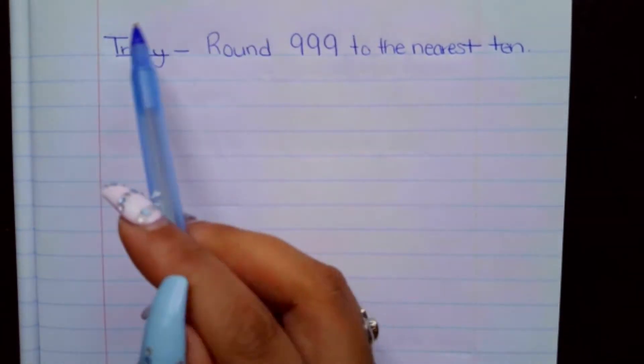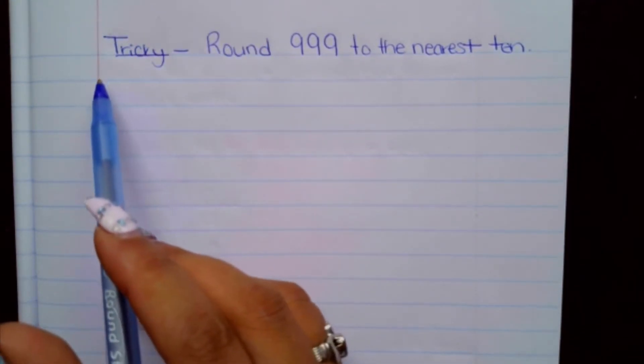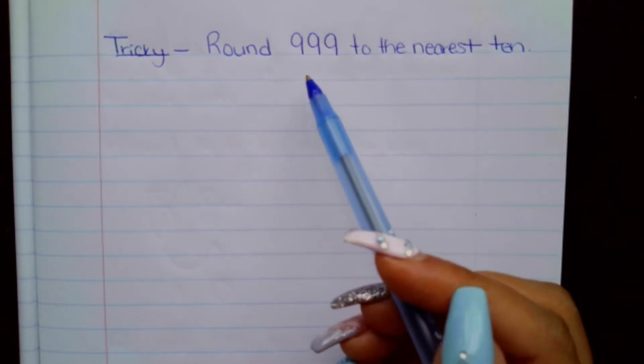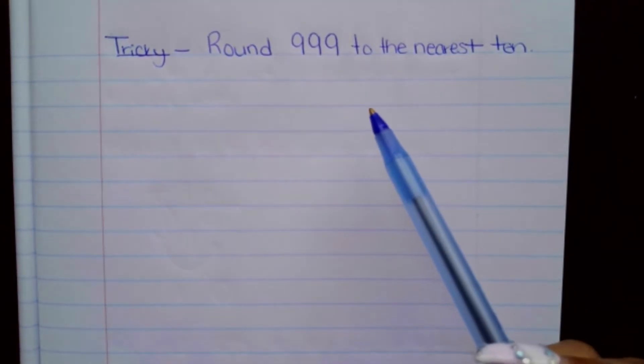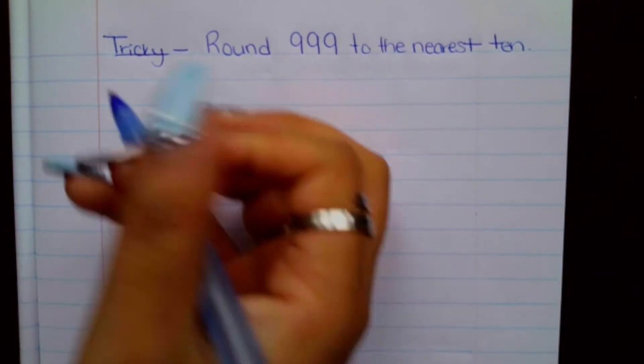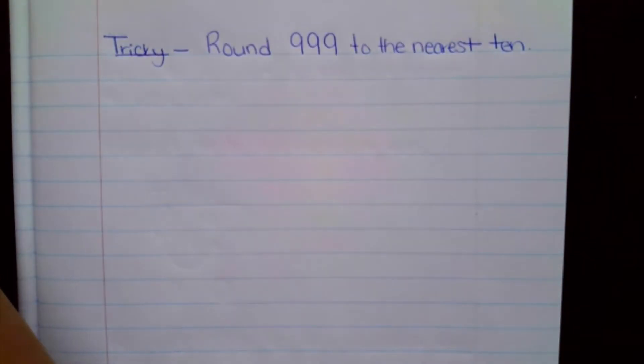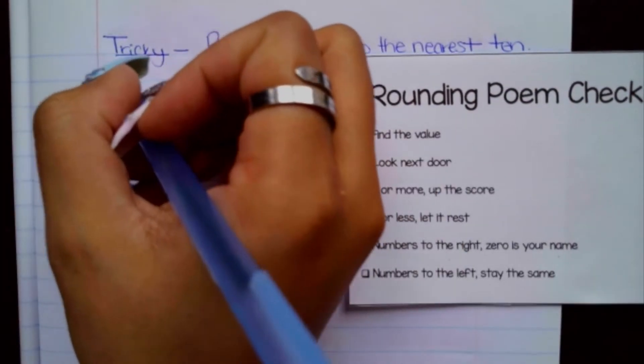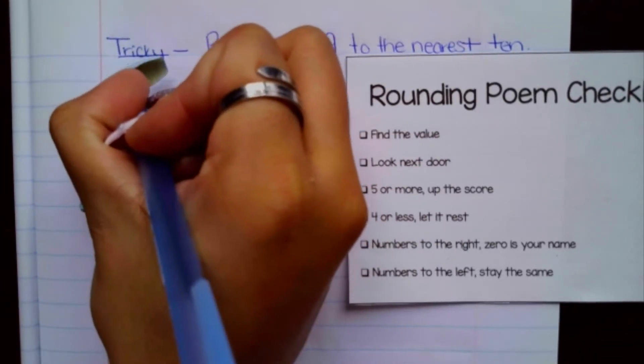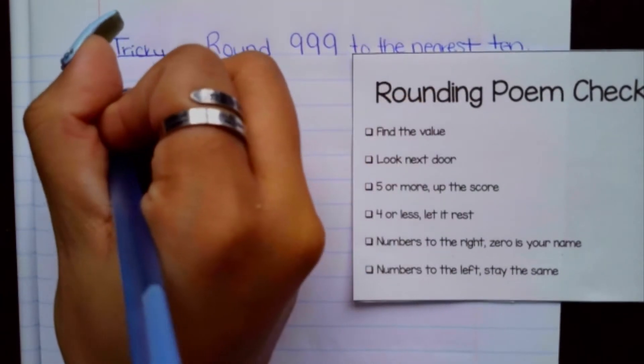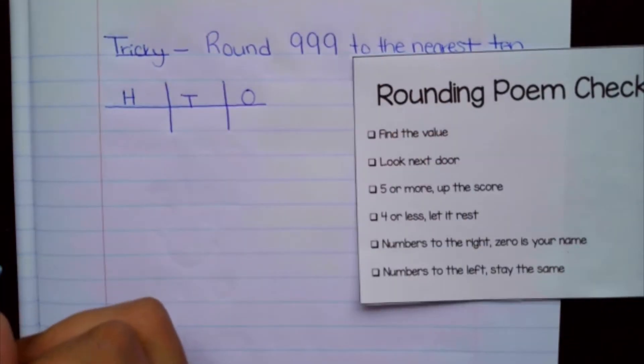Let's try one last problem. And this problem I would consider tricky. I've seen it many times in the classroom where scholars get confused about what they're supposed to do when they come across numbers like this. So the first thing that we're going to do is go ahead and put our number into an HTO chart. Hundreds, tens, and ones.